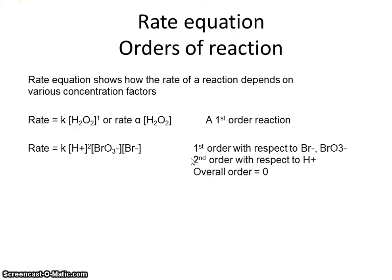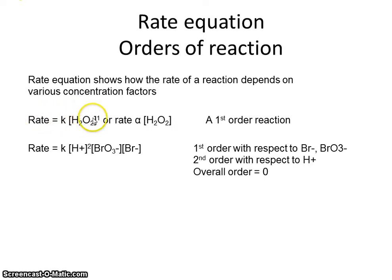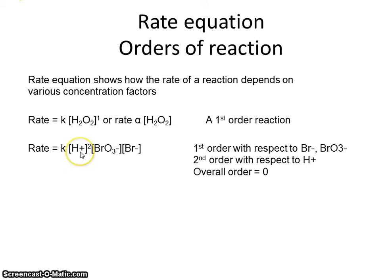Calculating the overall order of a reaction simply means adding up the individual orders, which should be straightforward. Orders can be one or two, giving an indication of how strongly each substance affects the rate. If it's first order, rate is proportional to that concentration. If it's second order, a change in H⁺ has a much greater — squared — effect on the rate. What would zeroth order mean? Pause and think.